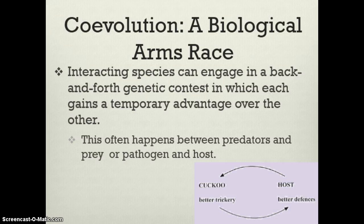Many times when organisms co-evolve, they get into an arms race with each other — each one trying to get an advantage over the other. This happens with predators and prey: the predator gets better at catching prey, the prey finds new ways to avoid the predator. It also happens with pathogens like viruses, which keep getting better at evading us as we try to cure viral diseases.